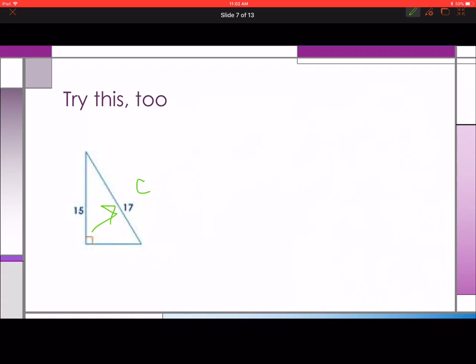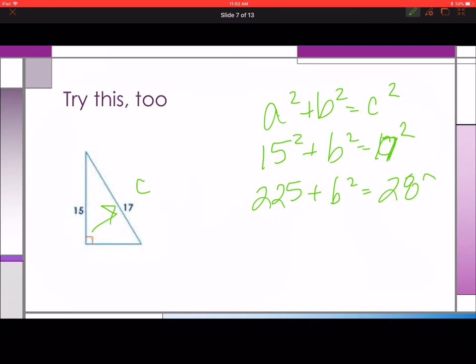This one is our c. We write our equation first. We plug our numbers in, 15 squared is 225, 17 squared is 289.